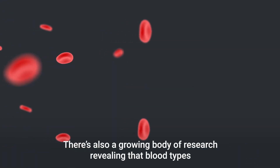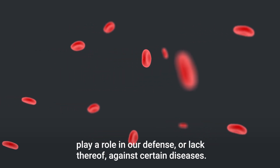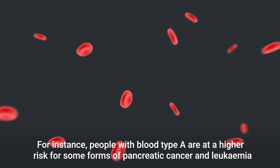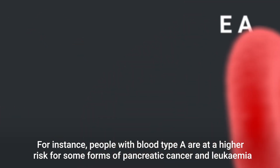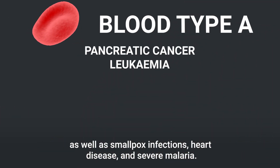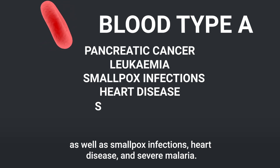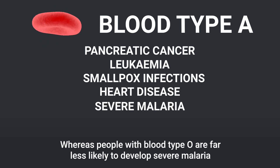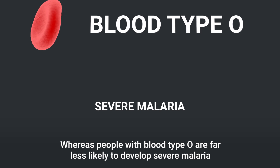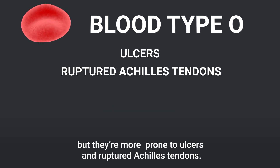There's also a growing body of research revealing that blood types play a role in our defense, or lack thereof, against certain diseases. For instance, people with blood type A are at a higher risk for some forms of pancreatic cancer and leukemia, as well as smallpox infections, heart disease, and severe malaria. Whereas people with blood type O are far less likely to develop severe malaria, but they're more prone to ulcers and ruptured Achilles tendons.